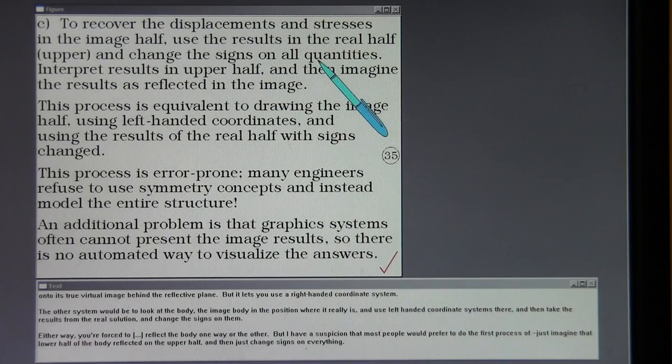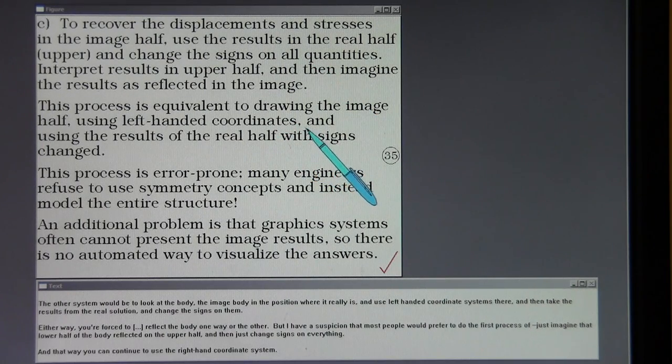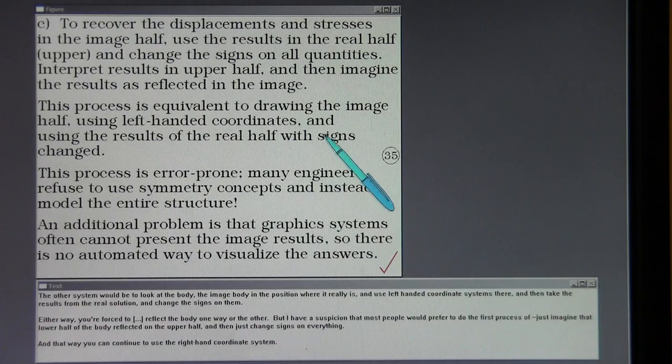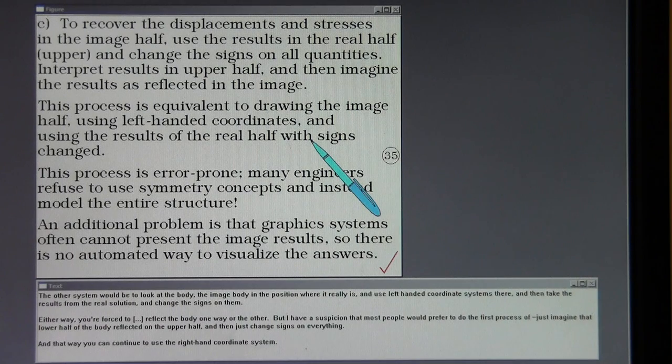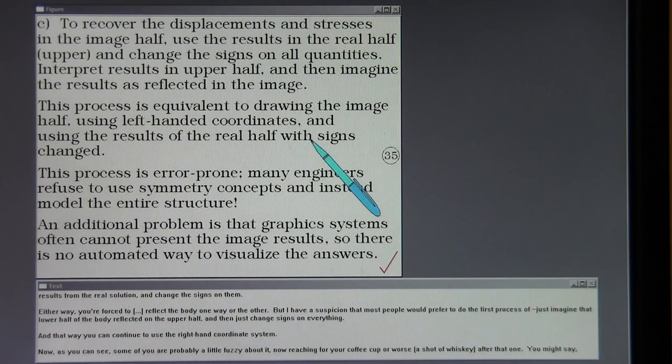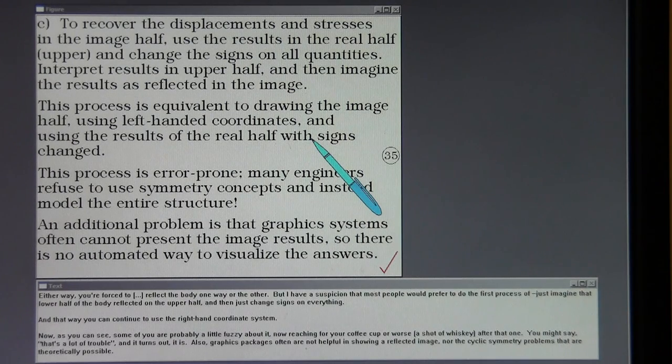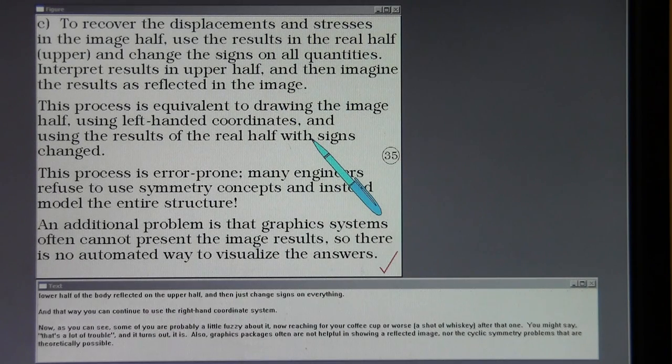The other process would be to look at the body, the image body, in the position where it really is and use left-handed coordinate systems there and then take the results from the real solution and change the signs on them. Either way, you're forced to either reflect, you reflect the body one way or the other. But I have a suspicion that most people would prefer to do the first process of just imagine that lower half of the body reflected on the upper half and then just change signs on everything. And that way you can continue to use a right-handed coordinate system.